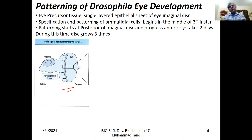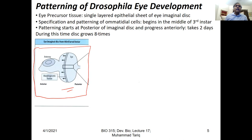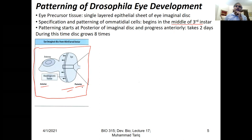In the imaginal disc, patterning starts at the middle of the third instar larva, and it starts at the posterior side. This is the posterior side of the imaginal disc, and this is the anterior side. The patterning initiates at the posterior side but progresses towards the anterior. It sweeps across and takes nearly two days.